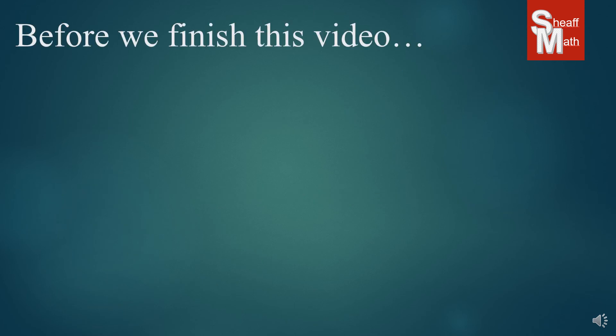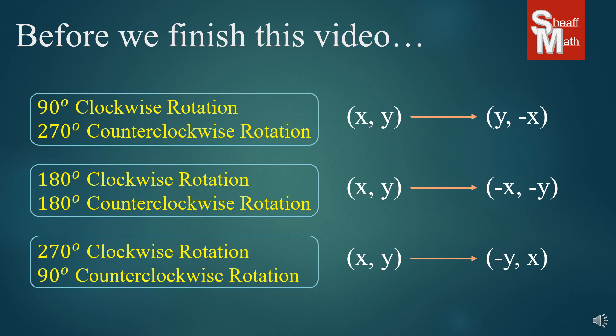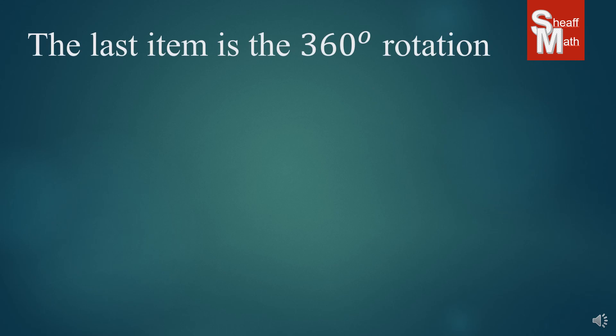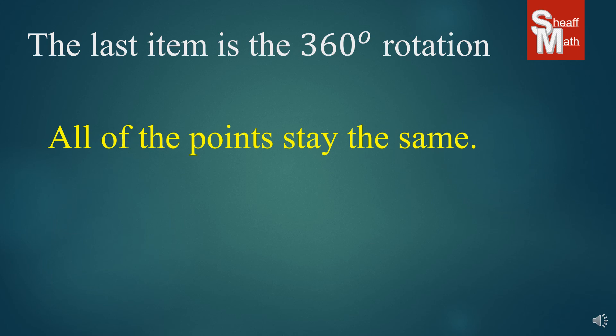Before we finish the video, get your phone or some camera and take a picture of this — these are the rules for our rotations. You can find them anywhere on the internet. If you want a quick reference, take a picture of those rules if you're working online. Now the last item is the 360 degree rotation. We all know what a 360 is — it's a full circle — so the image goes back onto itself. All of the points will stay the same; there will be no change in the points in a 360 degree rotation.